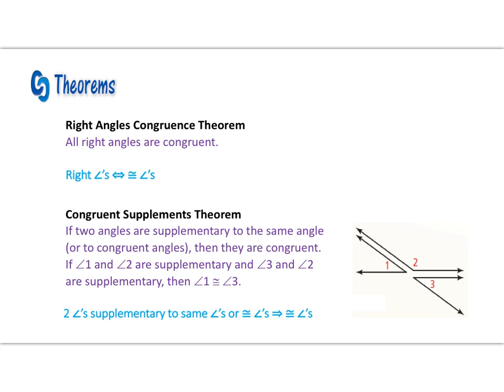First, we'll start with our right angles congruence theorem, which states all right angles are congruent. To shorten that to an implied statement, we can say right angles implies congruent angles.